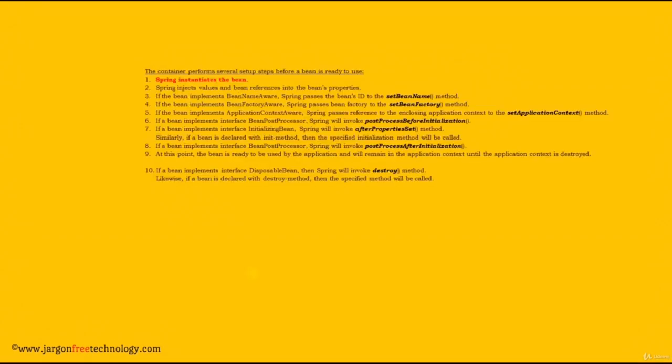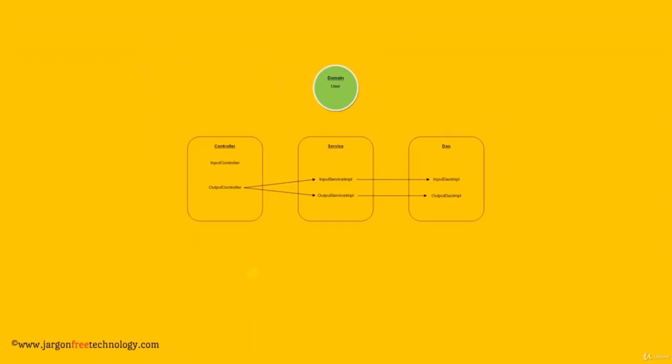Before proceeding further, I want to clarify a few things. Of the many operations performed by a Spring container, we will be looking only at instantiation in this course. Currently these are the classes in our application. In order for our application to work, we need to create instances of these classes and inject the classes with the appropriate dependencies.